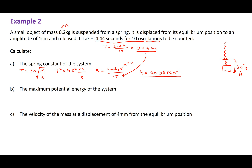Now it wants to know the maximum potential energy of the system. We know that the maximum potential energy equals one half times the spring constant times the amplitude squared, because the potential energy at any point is one half times the spring constant times the displacement squared, and amplitude is your maximum displacement. So E_p equals one half times 40.05 times 1 times 10 to the minus 2 all squared, which gives a potential energy of 2.0 times 10 to the minus 3 joules.